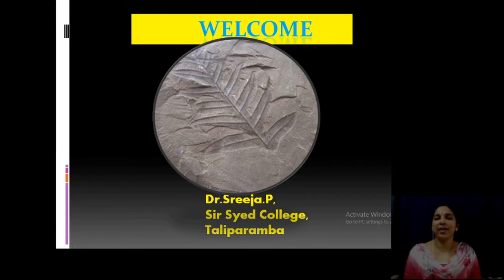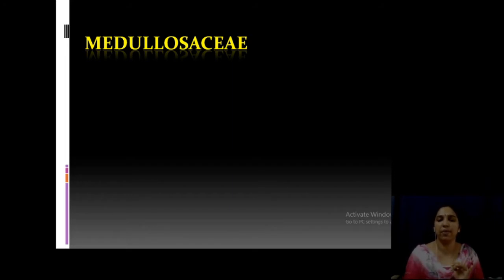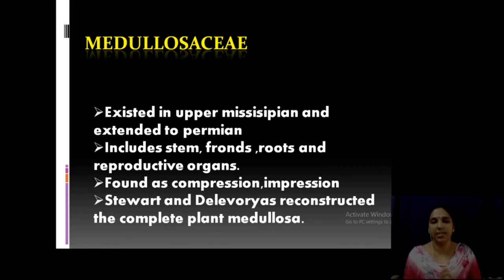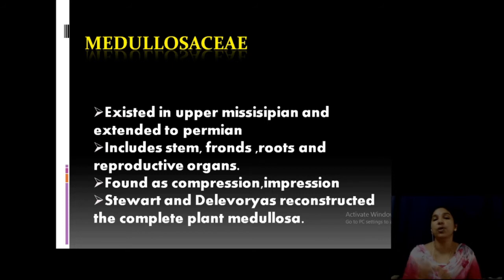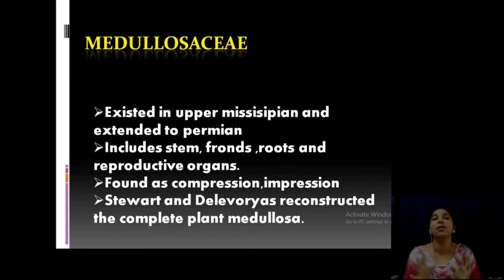Good morning and welcome back. Now we can move on to our second family of the order Pteridospermales, that is Medullosaceae. Remember the family name Medullosaceae. This family existed in the upper Mississippian and extended to the Permian period. All of them flourished well in the Carboniferous period, and the main fossilized forms are the stem, fronds (leaves), roots, and reproductive organs.